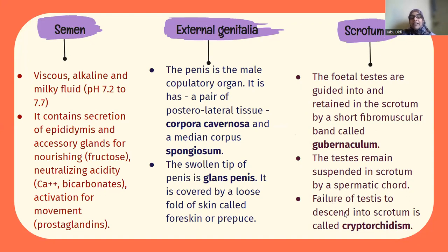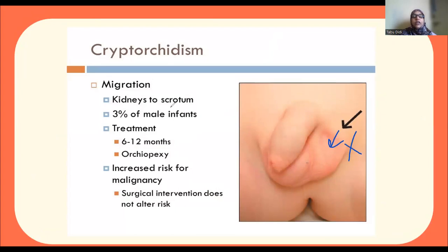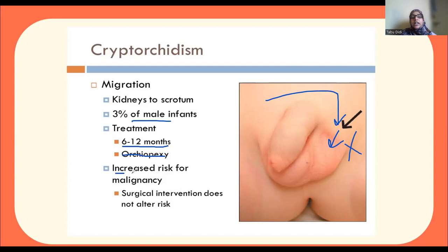In some cases, if during fetal development the testes are not able to descend into the lower abdominal cavity, the individual may suffer from a condition known as cryptorchidism. In this condition one testis may be present and the other absent. This failure of descent occurs in about three percent of male infants. It can be treated when the baby is six to twelve months old; if untreated it may lead to cancer.